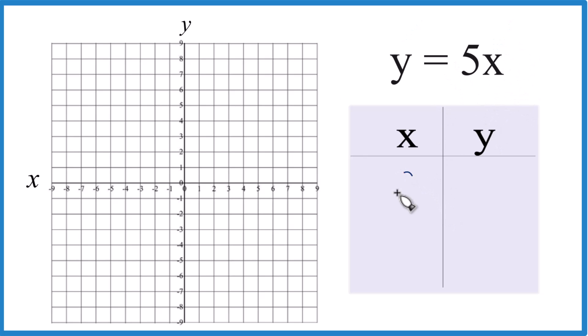Let's start out with 0, because 5 times 0, that's just 0. How about 1? 5 times 1 is 5, and then negative 1. 5 times negative 1 is negative 5.